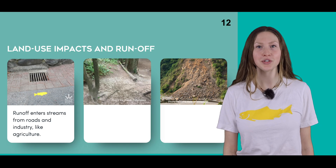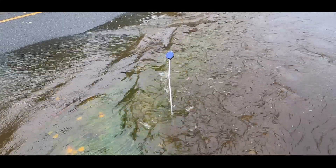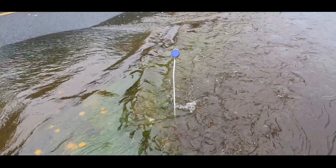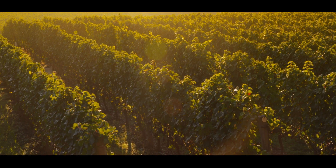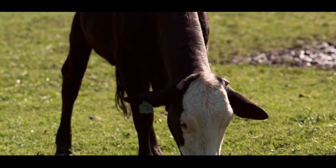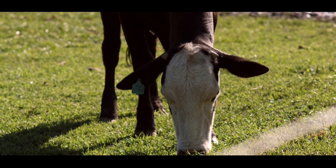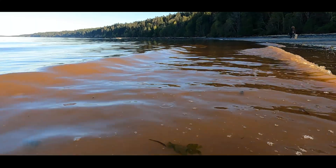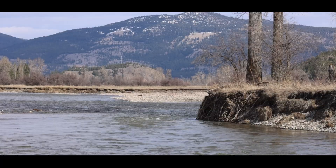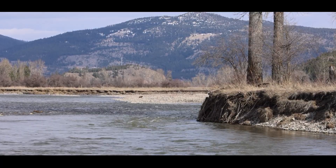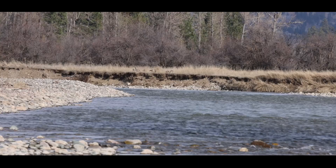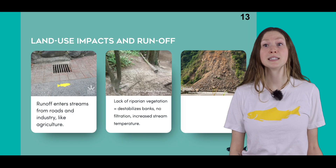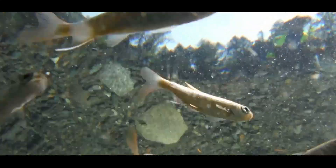When substances get washed into streams from nearby areas, we call that runoff. When it rains, the water rushes over hard surfaces like roads, patios and buildings, picking up pollutants along the way. For example, there's agricultural runoff like chemical fertilizers, pesticides, herbicides, or animal waste that washes off farm fields. When excess nutrients enter the stream from fertilizer runoff, this can cause too much algae to grow. When riparian vegetation like shrubs and trees are removed, stream banks become susceptible to erosion because there are no roots to hold the soil. The lack of vegetation also increases stream temperatures, reducing shade and making the stream too hot for salmon.